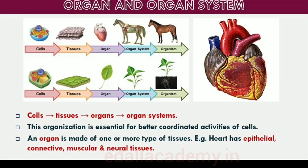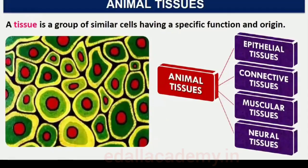Cells, tissues, organs and organ systems split up the work in a way that exhibits division of labor and contribute to the survival of the body as a whole. The structure of the cells varies according to their function. Therefore, the tissues are different and are broadly classified into four types: epithelial, connective, muscular, and neural.